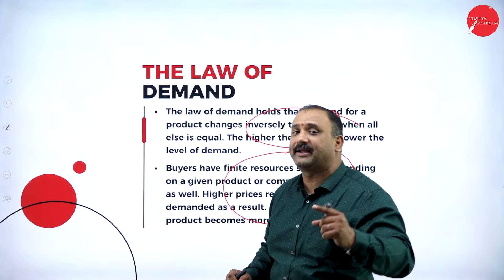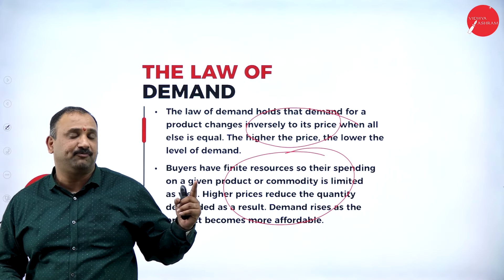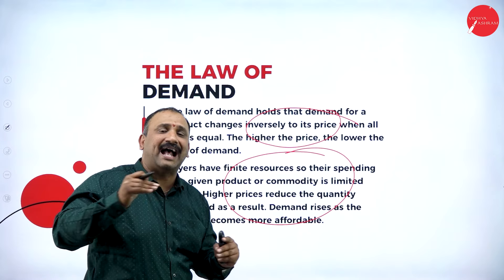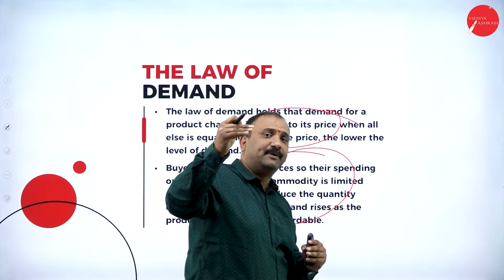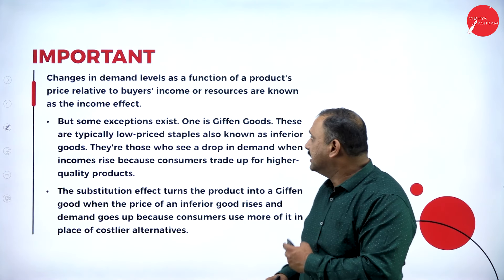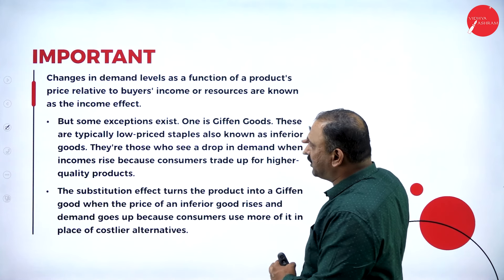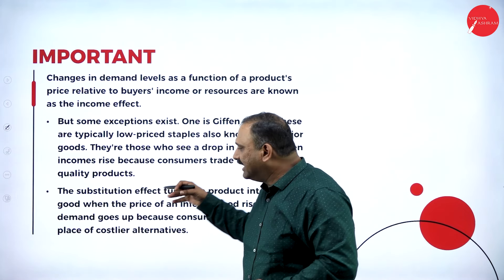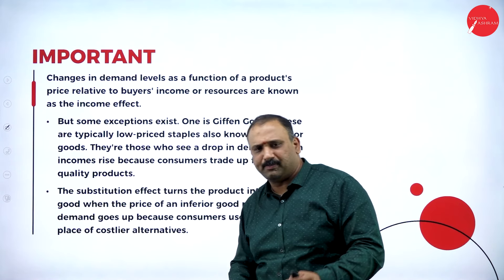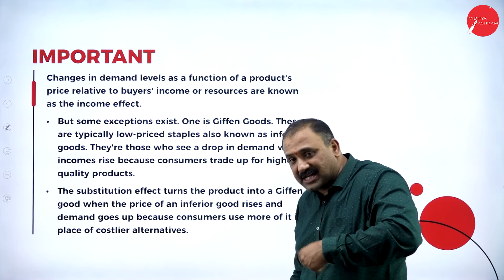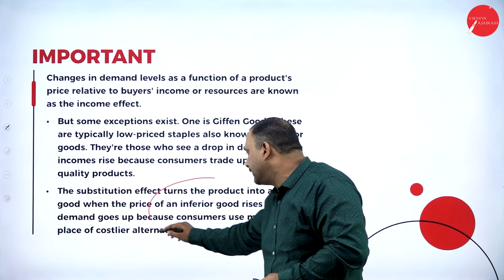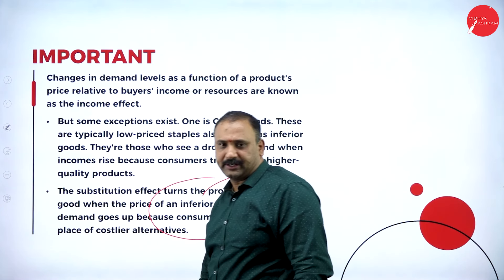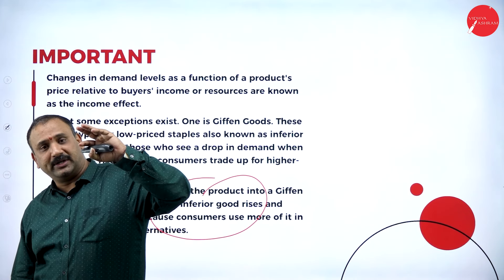Every time a seller increases the price beyond a certain level, it signals negativity to the buyer, who restricts himself from going to the marketplace and waits for prices to fall. Price will not always be accepted as you keep changing it — there is a limit to how much the buyer will accept. Some exceptions exist, such as Giffen goods, which are typically low-priced staples known as inferior goods. When the price of an inferior good rises, demand can go up because consumers make more use of it instead of the costlier alternatives.